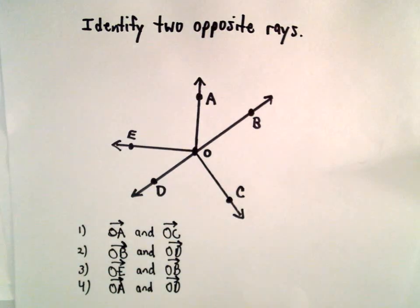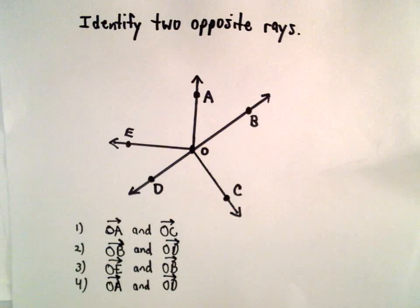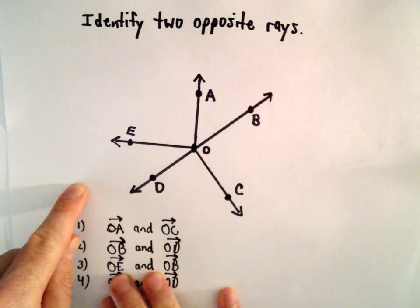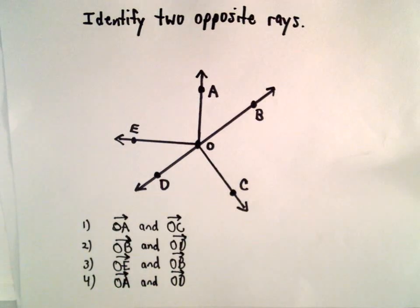In this example, we want to identify two opposite rays. The definition we're looking for is two rays with a common endpoint that point in opposite directions and form a straight line. Recall the definition of a ray: a ray is a portion of a line which starts at a single point and then goes off in some particular direction to infinity. That's what we're looking for in this case.